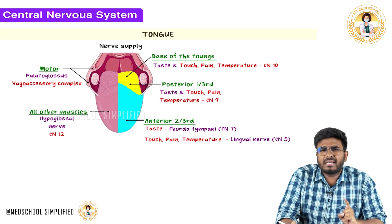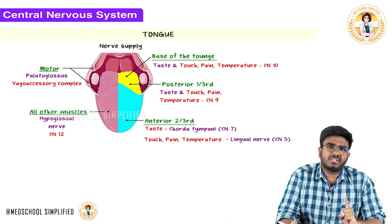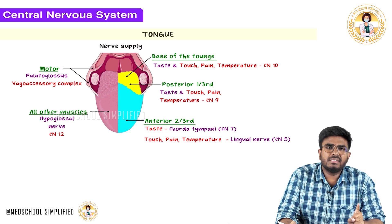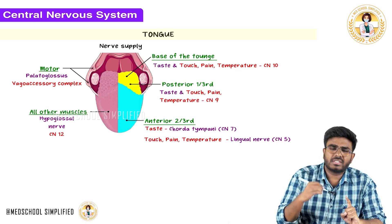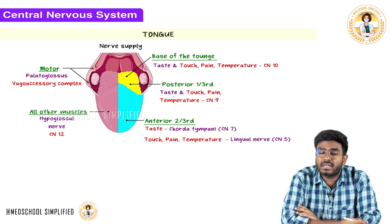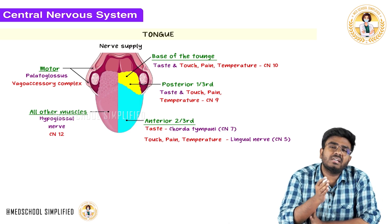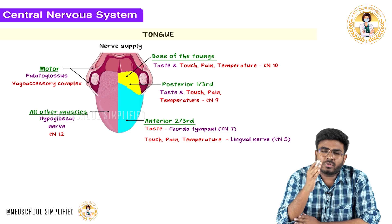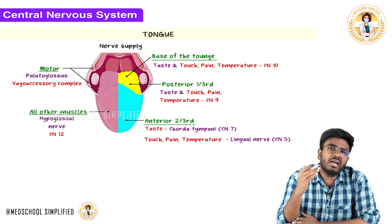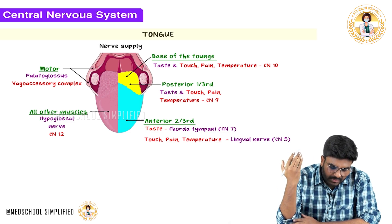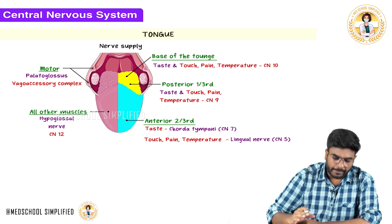There are two different types of sensations going from the tongue. One is general sensation — touch, pain, temperature — going to the central nervous system. Not only that, but special sensations are also going from the tongue. So we have to see the general somatosensory supply as well as the special sensory supply.